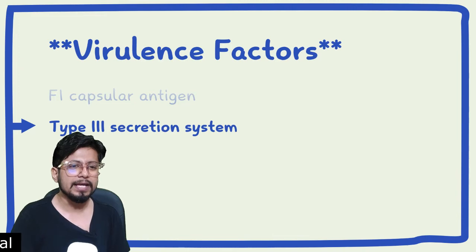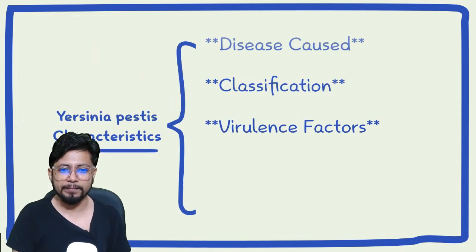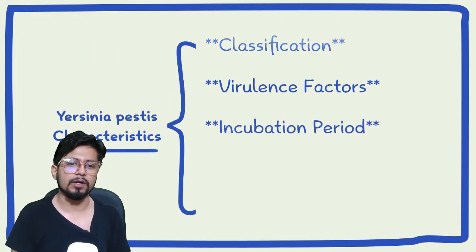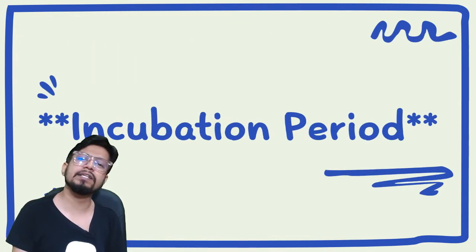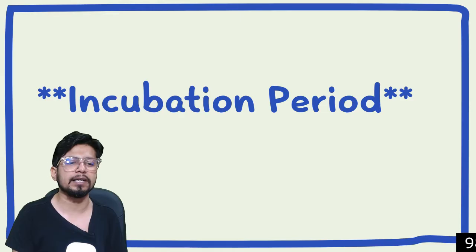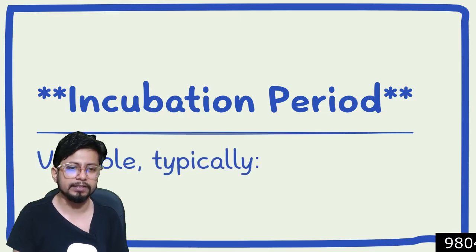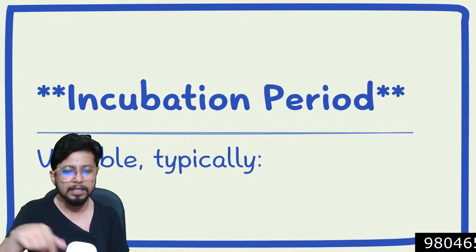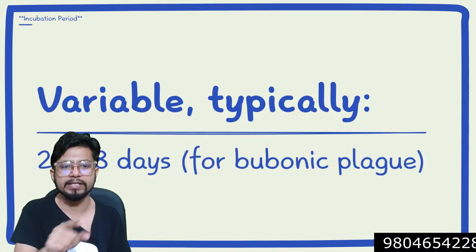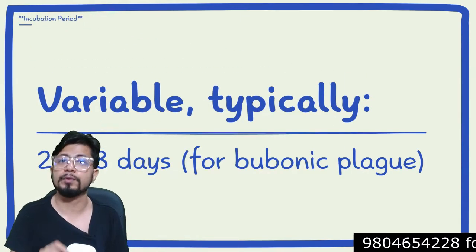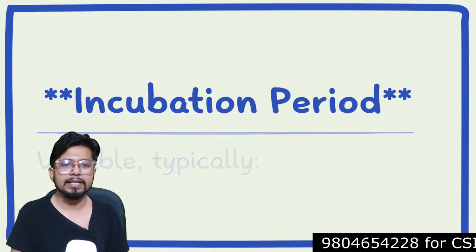The next parameter is the incubation period, which is variable but typically ranges from 2 days to 8 days for bubonic plague.